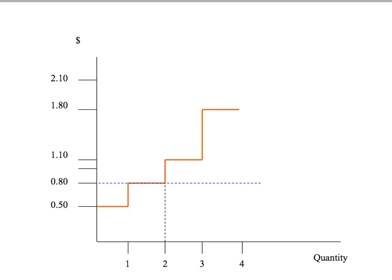Now imagine the price is $0.80 per apple. She'll sell one (marginal cost $0.50 < $0.80). For the second apple, $0.80 is just enough to compensate her, so she's indifferent between selling and not selling it — captured by a horizontal line, just as we did for a demand curve. Pick any price and you'll find that Angie's supply curve for apples traces out her entire marginal opportunity cost curve for apples.